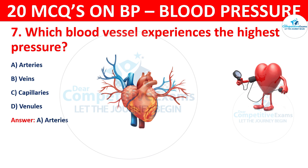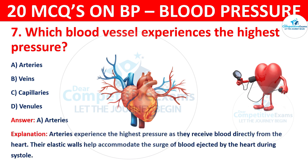The correct answer is A, Arteries. Arteries experience the highest pressure as they receive blood directly from the heart. Their elastic walls help to accommodate the surge of blood ejected by the heart during systole.